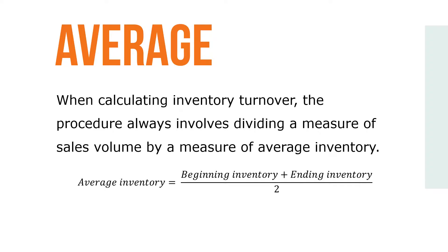When calculating inventory turnover, the procedure always involves dividing a measure of sales volume by a measure of average inventory. This average inventory is commonly found by adding the beginning and ending inventories of the operating period and dividing by 2.